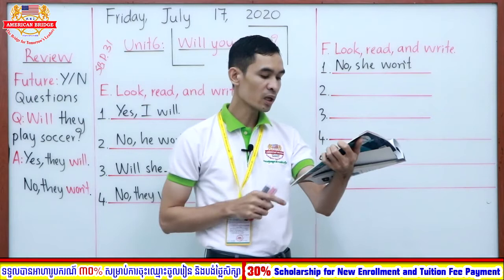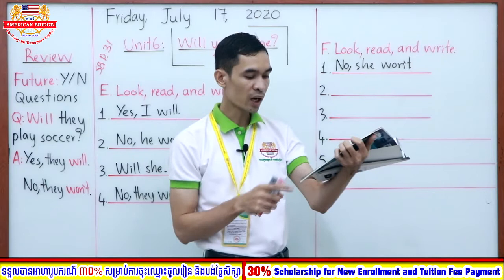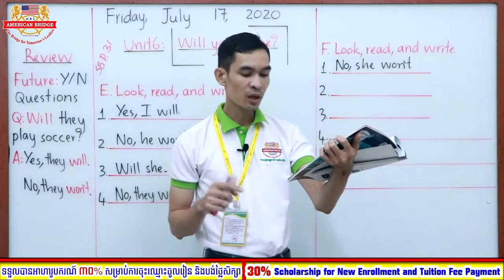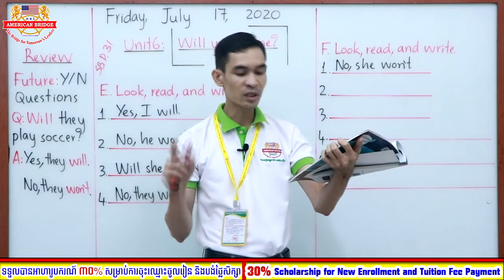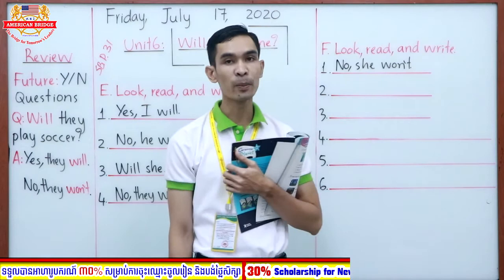Number three: 'Will Clara and Cam watch a movie?' Number four: the answer is 'No, she won't.' Number five: the answer is 'No, he won't.' Number six: the answer is 'Yes, they will.' So now I have a minute for you to complete this exercise, and after that I will correct for you. You can do it now.